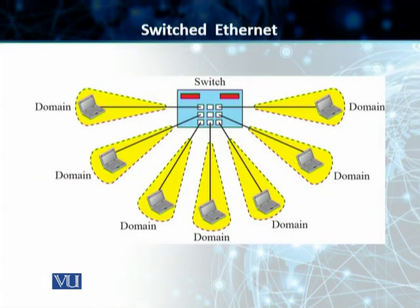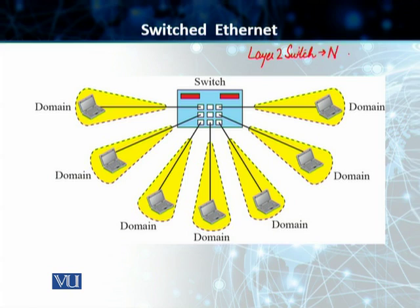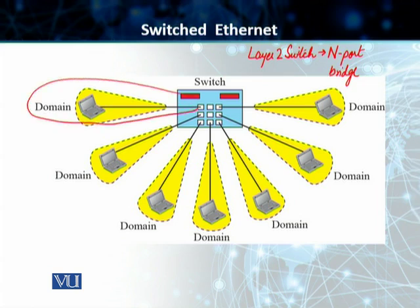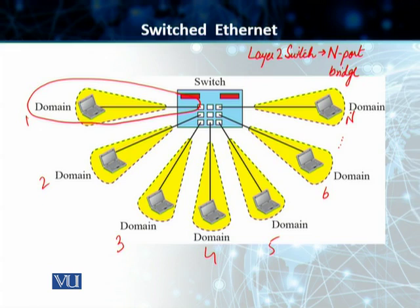We developed what is called switched Ethernet. As you can see, using this layer 2 switch — this layer 2 switch is nothing but an N-port bridge. In this case, your bandwidth is only shared between the switch and each one of your stations. And you will have as many collision domains as the number of ports on your switch, so each station can have its own particular domain.